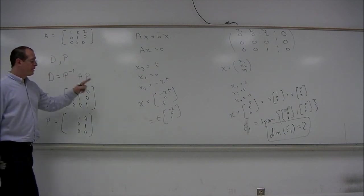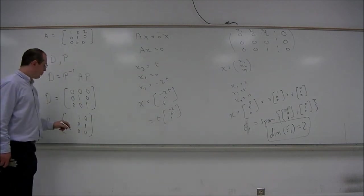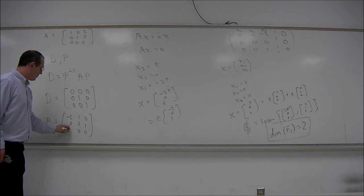And we can put that in here. Corresponding to the eigenvalue 0 is the eigenvector negative 2, 0, 1. Negative 2, 0, 1.